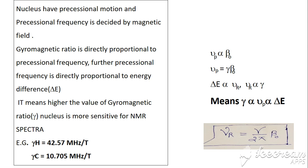Good afternoon friends. In my last lecture I explained about the sensitivity of a nucleus — proton NMR spectroscopy is very important compared to carbon-13 spectroscopy. In this lecture I will try to explain the gyromagnetic ratio. The gyromagnetic ratio is directly proportional to precession frequency.